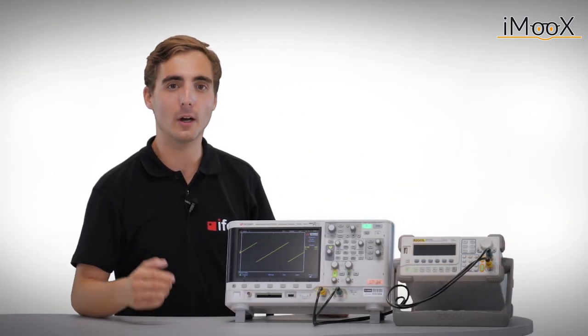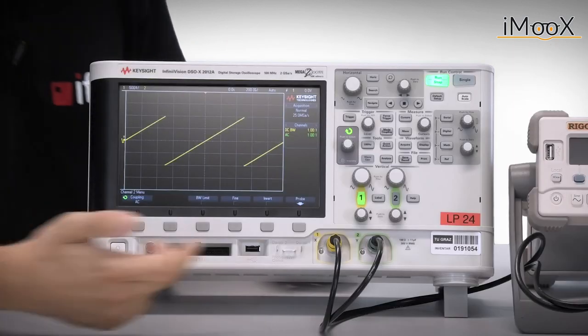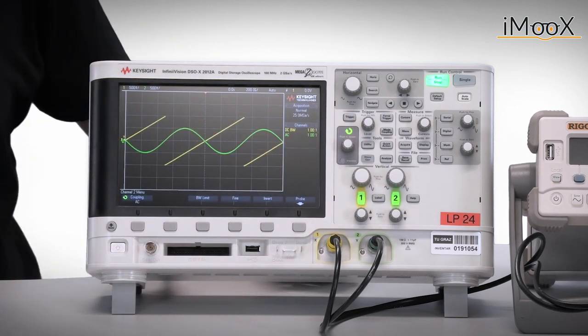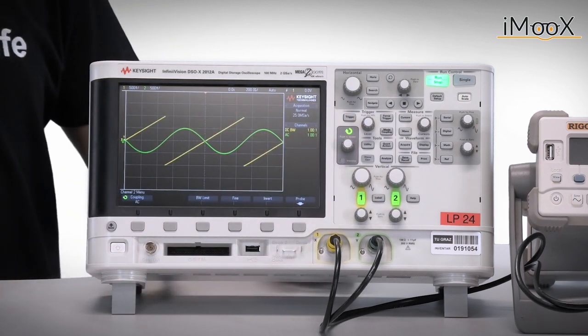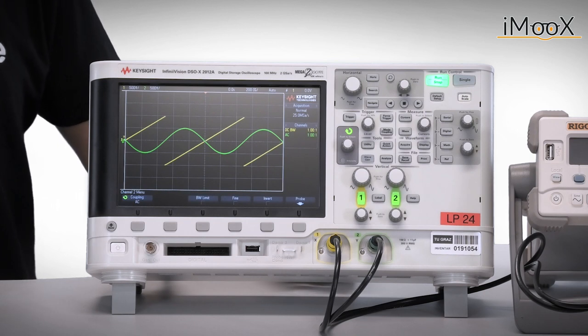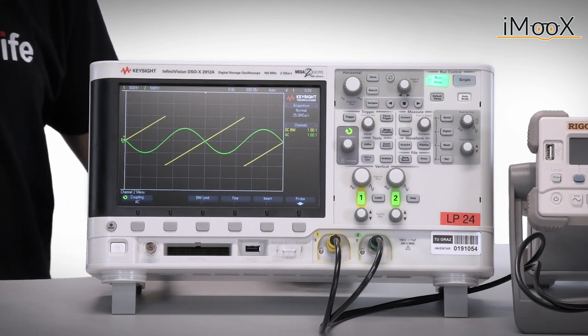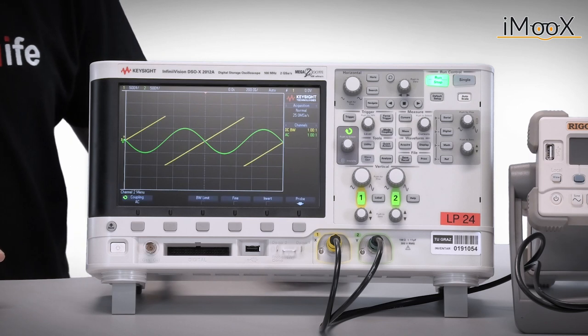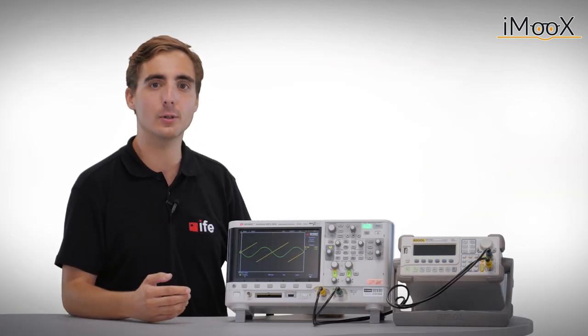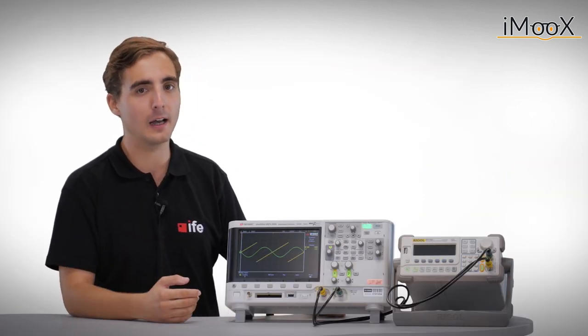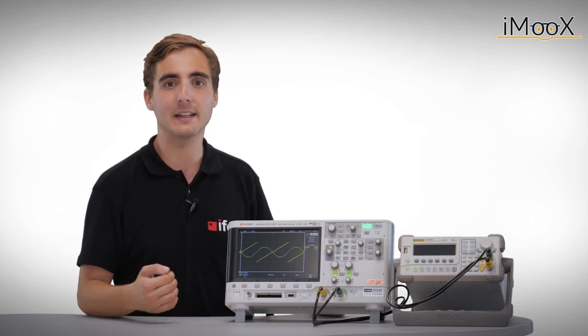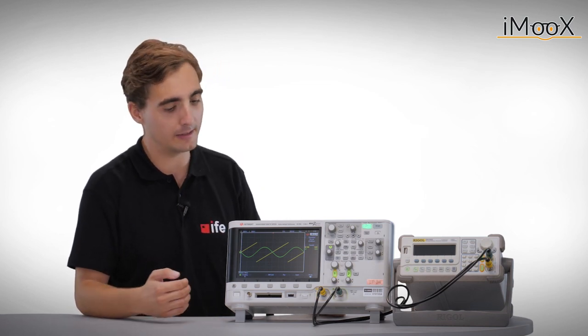After the trigger is set to our needs, a second signal can be added again. We see a stationary image for both signals, even though the trigger is only defined for the rising edge of channel 1. This is due to the fact that both frequencies are the same and therefore also the capture of the second channel is a static image.